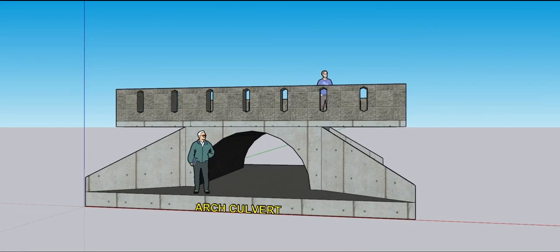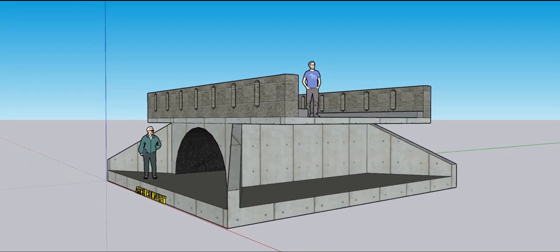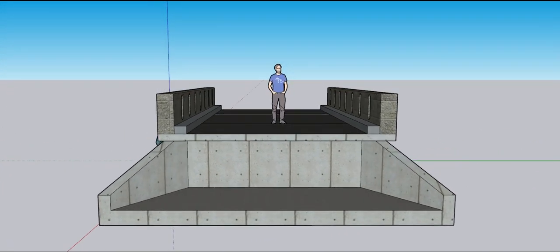Arch culverts have an artificial floor below the arch. They are made of concrete, and the arch is made of concrete.